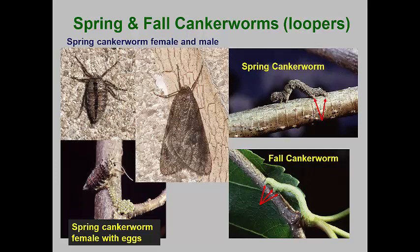Both species have females that are wingless and males with full wings. The only difference in the larvae is that the spring canker worm has two prolegs and the fall canker worm has three, with the first one being relatively small. Fall canker worm adults emerge in November to lay eggs, and spring canker worms emerge in April. The larvae feed in April and May, then drop to the ground to pupate.